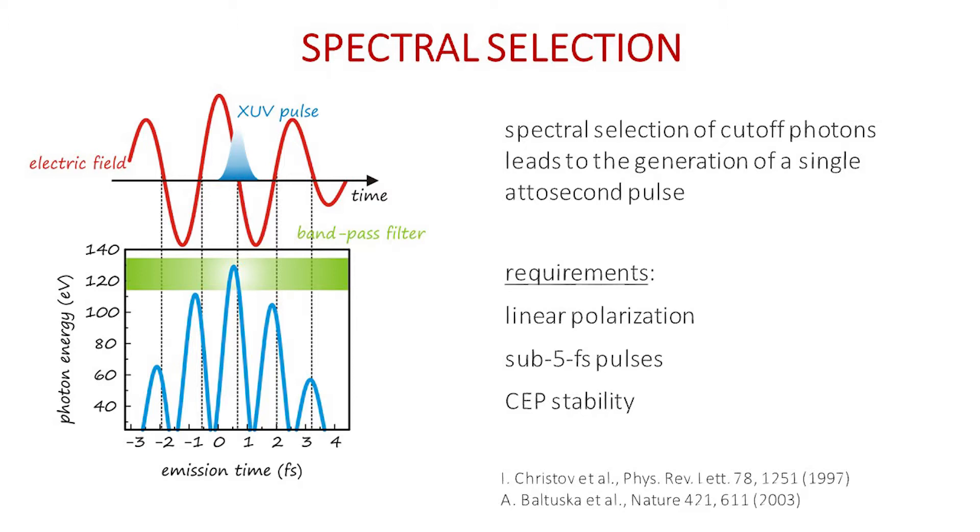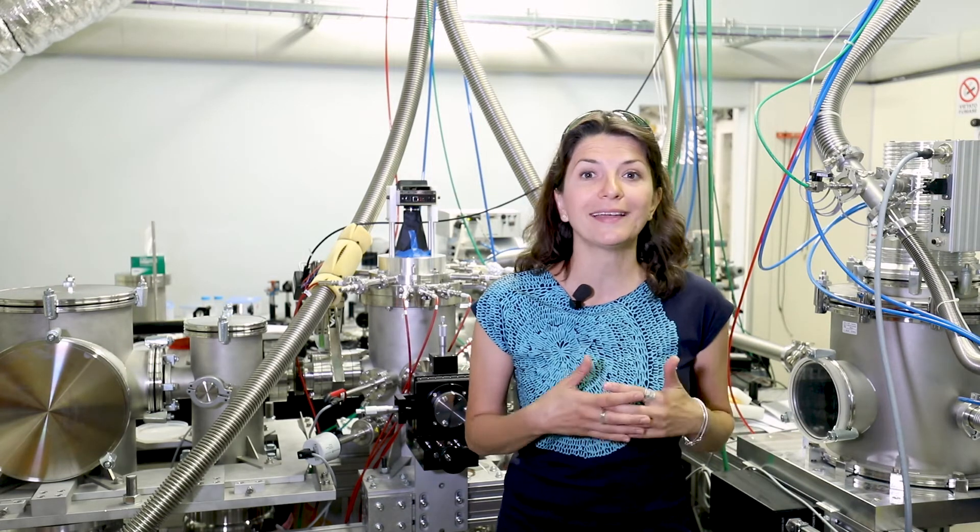One can select the spectral region in the harmonic spectrum called the cut-off region, for instance with a metallic mirror. With this approach, isolated attosecond pulses as short as 80 attoseconds in the 80 eV spectral region have been generated.